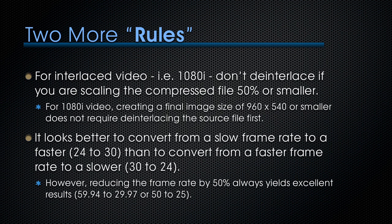Two more rules: for interlaced video, if you're shooting 1080i, don't de-interlace if you are scaling the compressed file 50% or smaller. For 1080i video, creating a final image size of 960x540 or smaller does not require de-interlacing the source file first. Also, it looks better to convert from a slower frame rate to a faster one — 24 to 30 — than from a faster to a slower one. However, there's an exception: reducing the frame rate by exactly 50% always yields excellent results, such as 59.94 to 29.97, or 50 to 25.